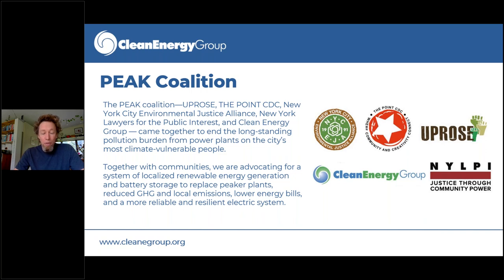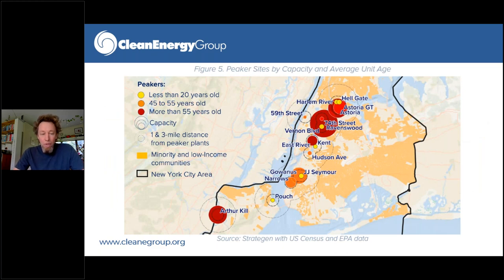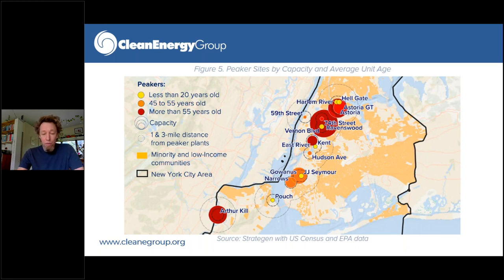We are working towards accelerating the retirement of these power plants and replacement with clean, non-combustion alternatives. This is a snapshot of what peakers in New York City look like. In total there's about six gigawatts of peaking capacity — a little lower now since the PEAK Coalition started several years ago, as some have already shut down. There are about 19 power plants acting as peakers total. The ones that are red are old — more than 55 years old. You can see the overlap with communities of color and the environmental justice impacts of these peaker power plants, which is part of the reason Clean Energy Group got involved and why the PEAK Coalition exists.